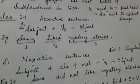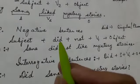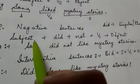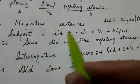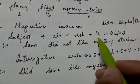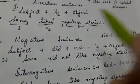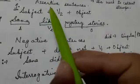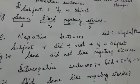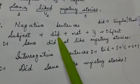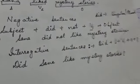Next is negative. In negative, we will add 'did' — subject ke saath kya add hoga? Did — plus not, plus verb's first form. Keep this thing in mind: in simple sentences we use the second form of verb, and in negative we use 'did' with verb's first form.